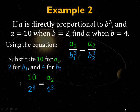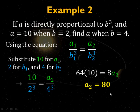10 over 2 cubed equals a2 over 4 cubed. Now, just cross multiply and solve for a2. When you do that, you get a2 equals 80, which means that if a is 10 when b is 2, then a is 80 when b is 4. You're not always going to have something so nice as a line. In this case, you have a cubic direct proportion.